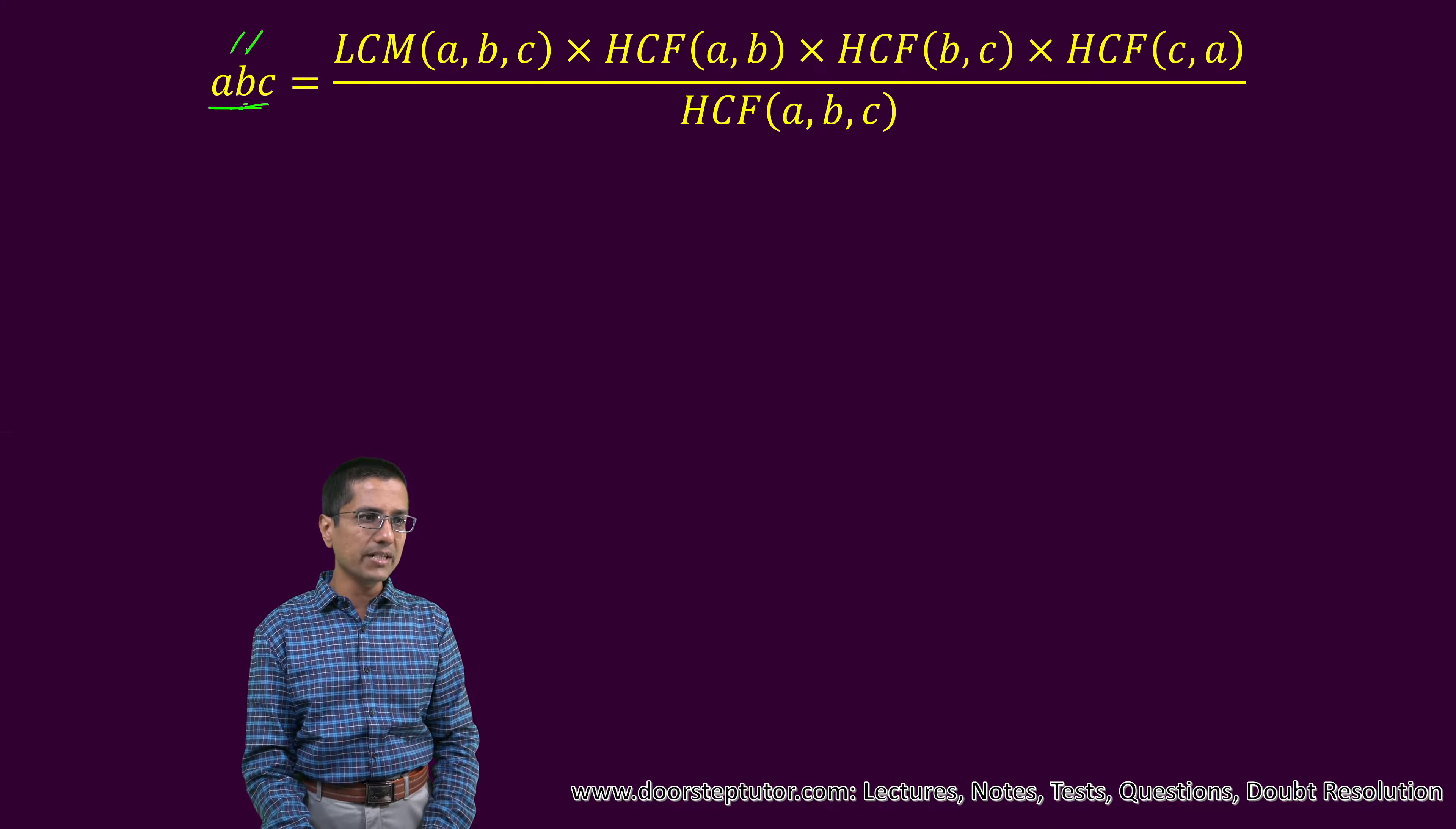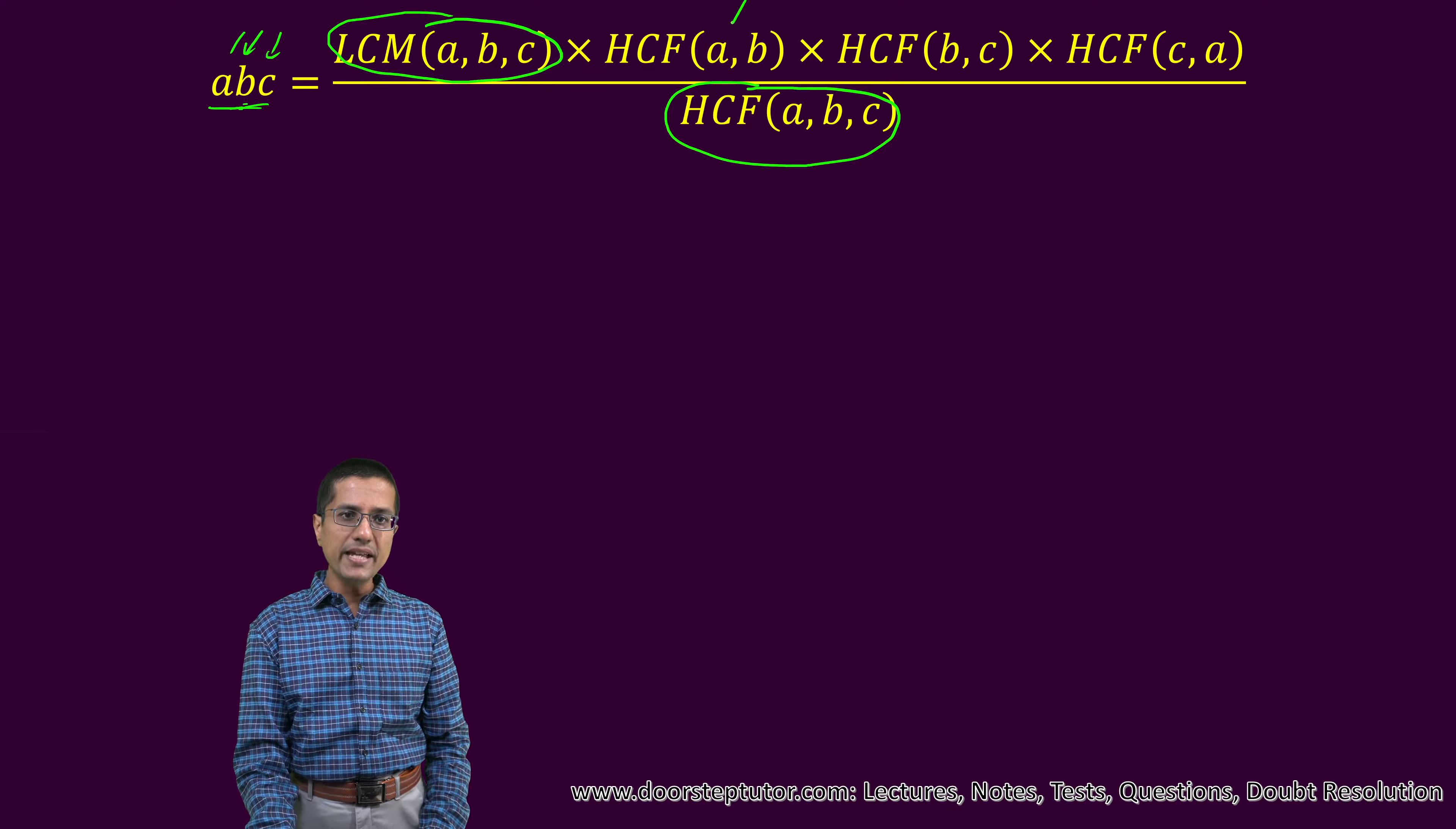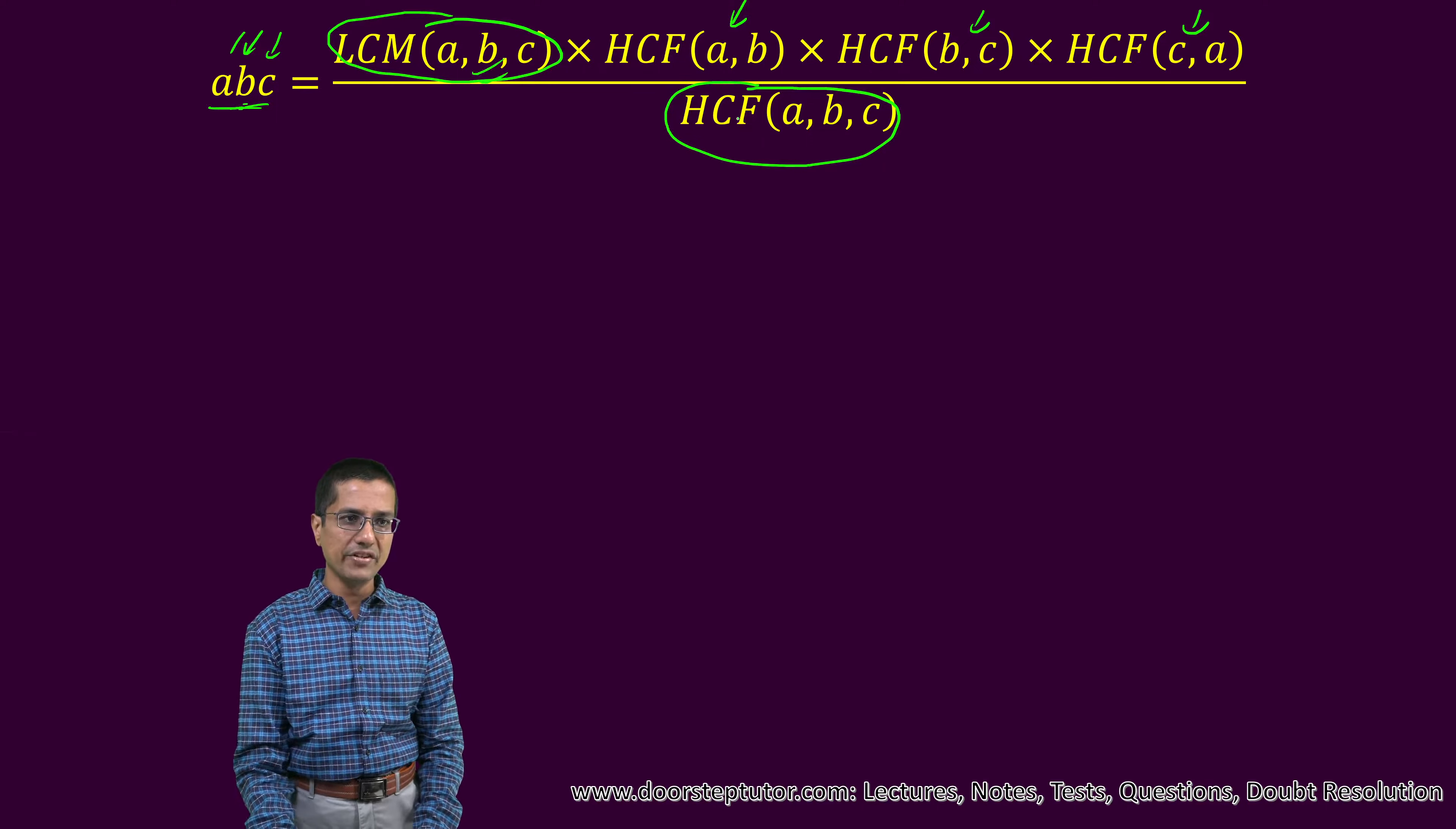The product of three numbers is actually equal to their LCM divided by their HCF, the HCF of three numbers, multiplied by the pairwise HCF of the three numbers. So it is HCF of AB. We make all possible pairs AB, BC and CA, take their HCF and then multiply with this division.